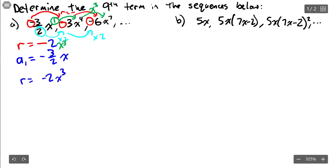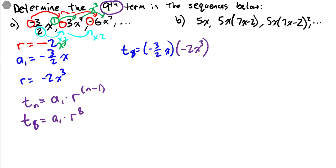Now the ninth term—let's think of our formula. T_n is the initial term times the ratio raised to the number minus one, right, one less than the term number. So in this case, term eight is our initial term times the ratio to the eighth power. So essentially we just plug it in. T_8 is our initial term, which is negative three over two x, times our ratio, which is negative two x cubed, raised to the eighth power.